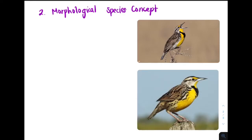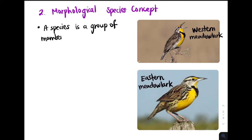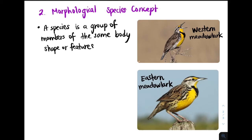Now let's take a look at the morphological species concept. On the right we have two photos: a western meadowlark and an eastern meadowlark. As you can tell, they look quite similar — they seem to have similar colors and feather types. This concept suggests that a species is a group of members of the same body shape or features. So basically, a species is a group of individuals that look the same.